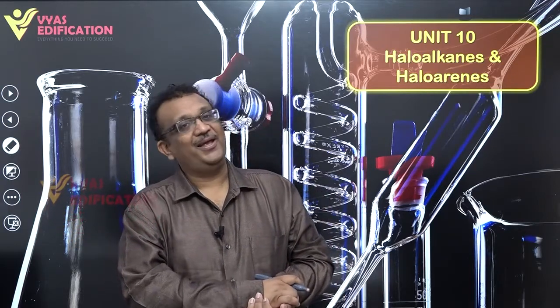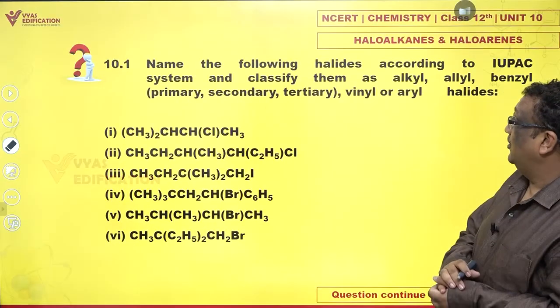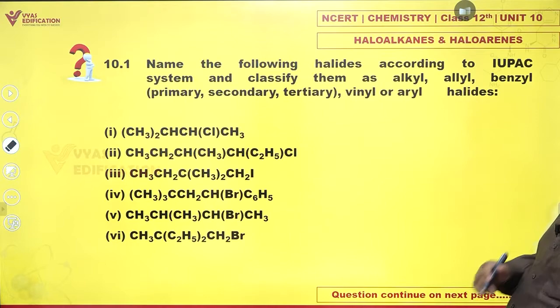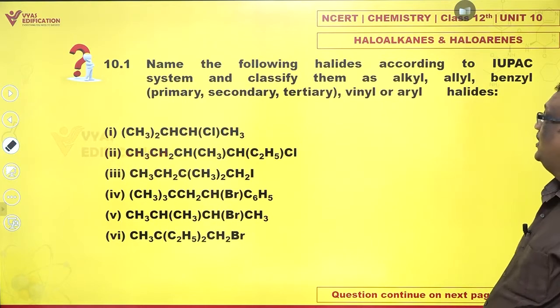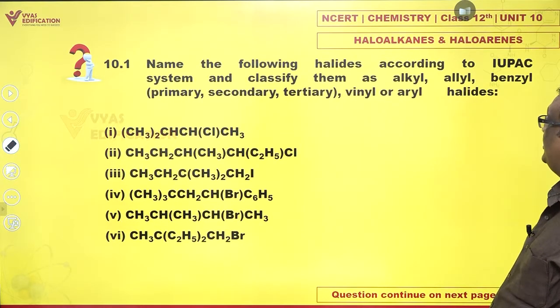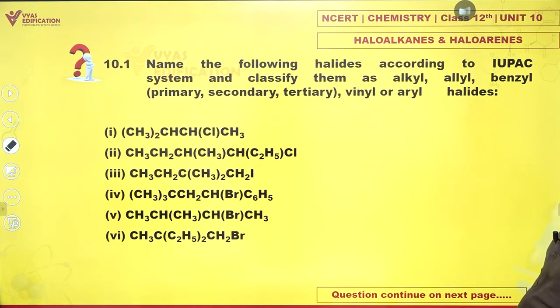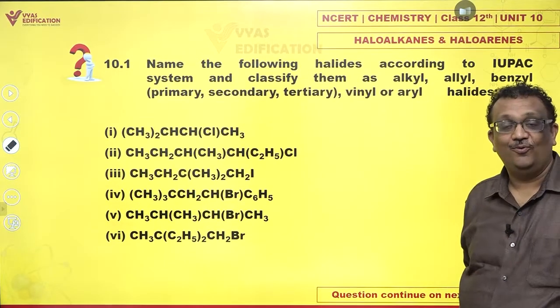So there we begin. Name the following halides according to the IUPAC system and classify them as alkyl, allyl, benzyl, primary, secondary, tertiary, vinyl or aryl halides.